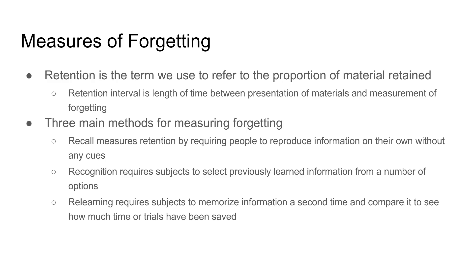Recognition requires people to choose the correct answer from a number of prompts given to them — like a multiple choice question. For example, if asked to name the capital of California and given the options San Diego, San Francisco, Sacramento, or Los Angeles, you have to recognize which is correct based on what you remember. The last measure is relearning, where you learn something and then at a later date memorize it again to measure how much more quickly you can do so, or how many fewer repetitions it takes.